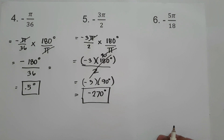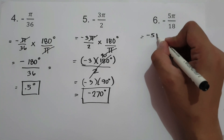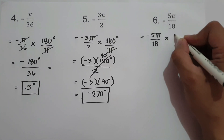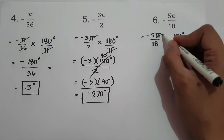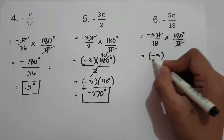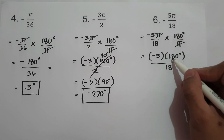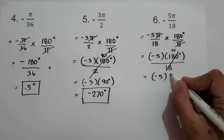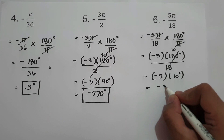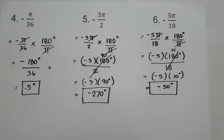On number 6, we have negative 5 pi over 18. Multiply by 180 degrees over pi to convert to degrees. Cancel pi, giving us negative 5 times 180 degrees divided by 18. Since 180 divided by 18 is 10, we have negative 5 times 10 degrees, which is negative 50 degrees. I hope you learned from this lesson. Thank you so much for watching. See you again next time. God bless us all.